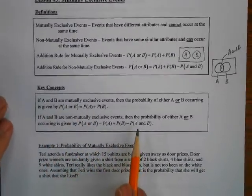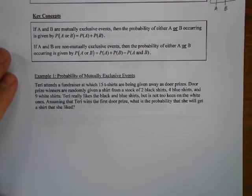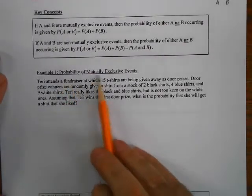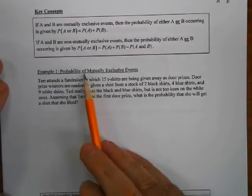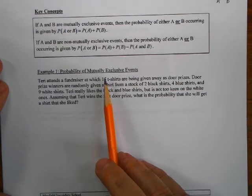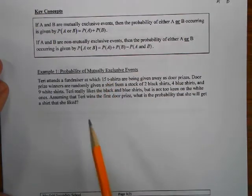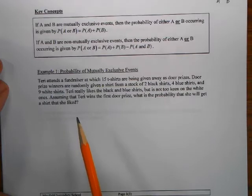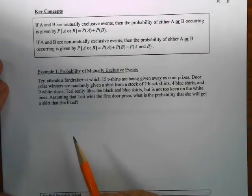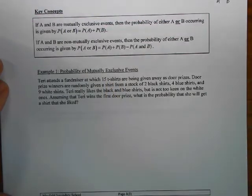So when you have a problem, go through the regular steps: define your events, find the probability of each event, then ask yourself — can both of these things happen at the same time? If yes, it's non-mutually exclusive and you use the formula subtracting the intersection probability. If the two events can't happen at the same time, use the simpler mutually exclusive version. In the examples I've noted which type each question is — but on an assessment, you won't be told, so you'll have to decide that for yourself.